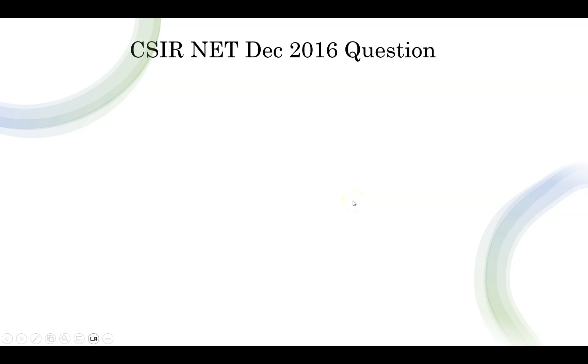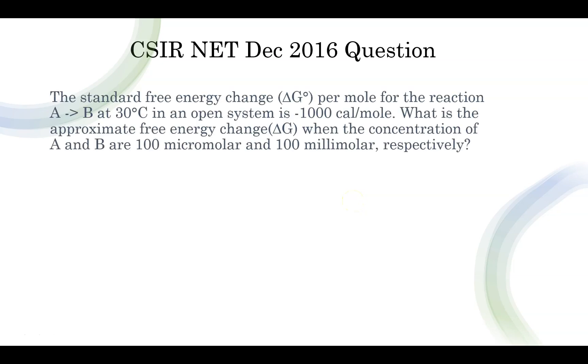The first question is from CSIR NET December 2016. They're asking that the standard free energy ΔG° per mole for the reaction A to B at 30 degrees Celsius in an open system is -1000 cal/mol. Note that there is a negative sign and also note there is calorie per mole. What is the approximate free energy change when the concentration of A and B are 100 micromolar and 100 millimolar respectively?